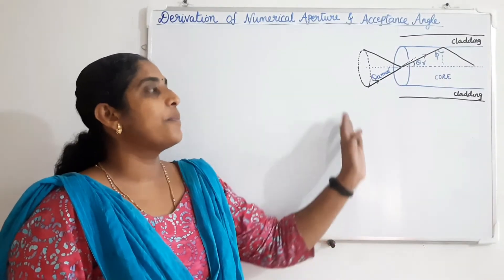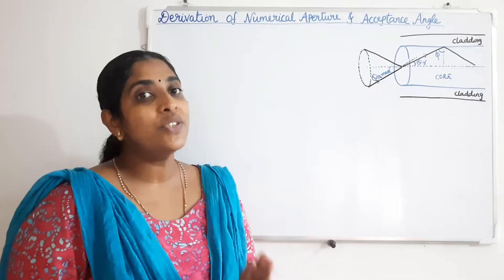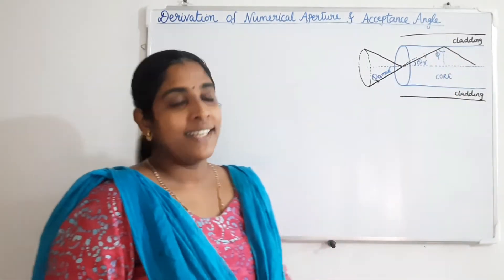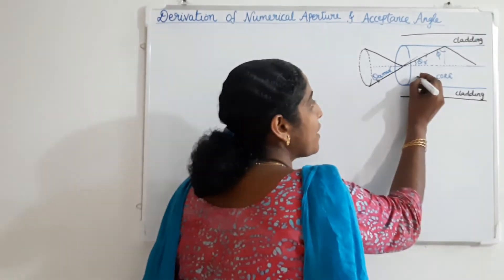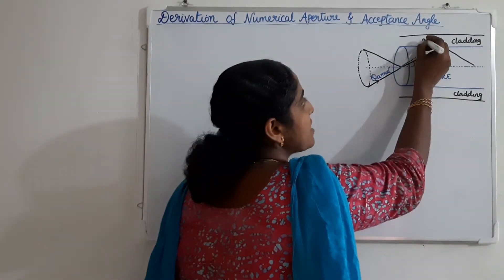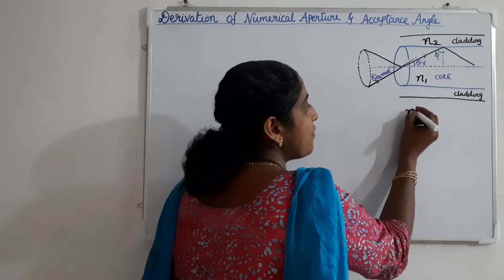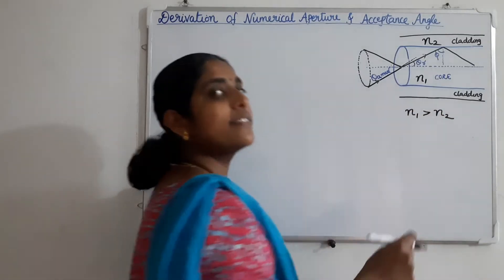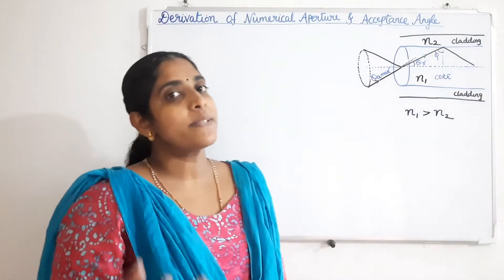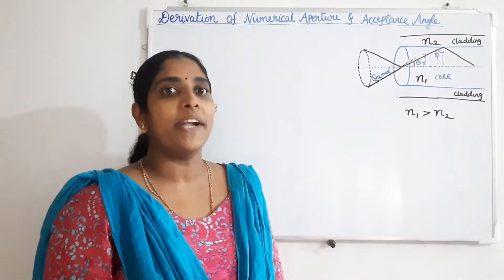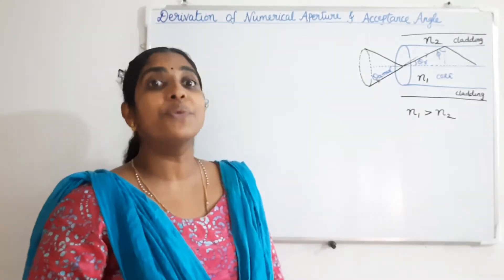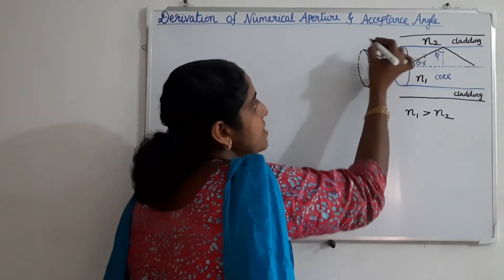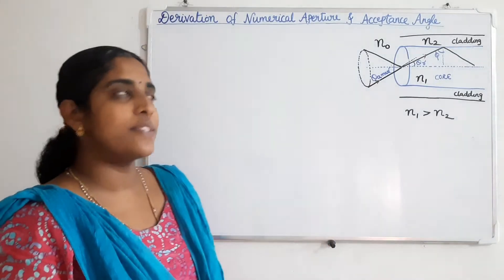Consider an optical fiber. The main two parts of an optical fiber are core and cladding. The refractive index of the core is N1 and the refractive index of cladding is N2. For total internal reflection to occur within the fiber, N1 must be greater than N2 — the refractive index of the core must be greater than that of the cladding, so that light travels from a denser to a rarer medium. Let the refractive index of the surrounding medium be N0; if it is air, then N0 is equal to 1.